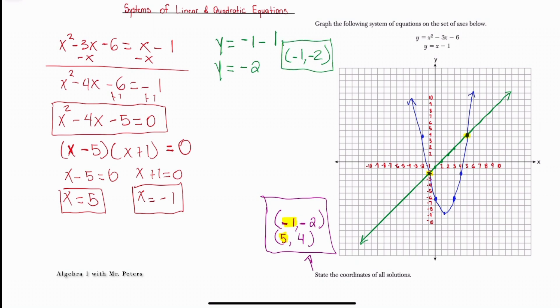When we repeat this again, when x is 5, y is equal to 5 minus 1, y is equal to 4. So when x is 5, the y is 4.